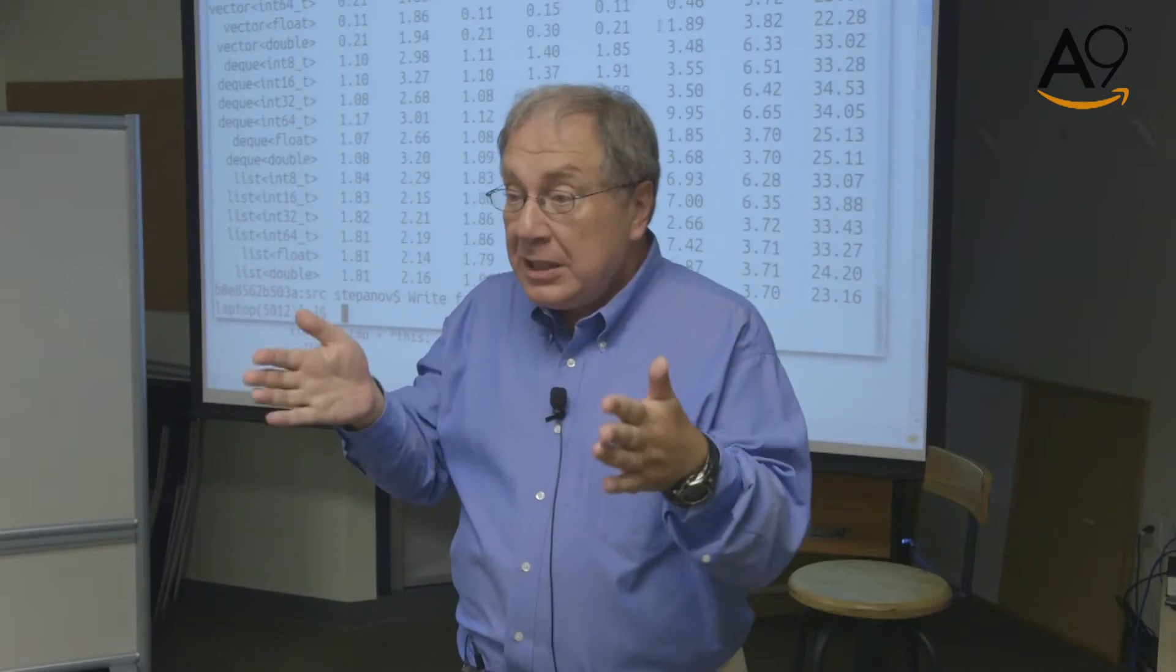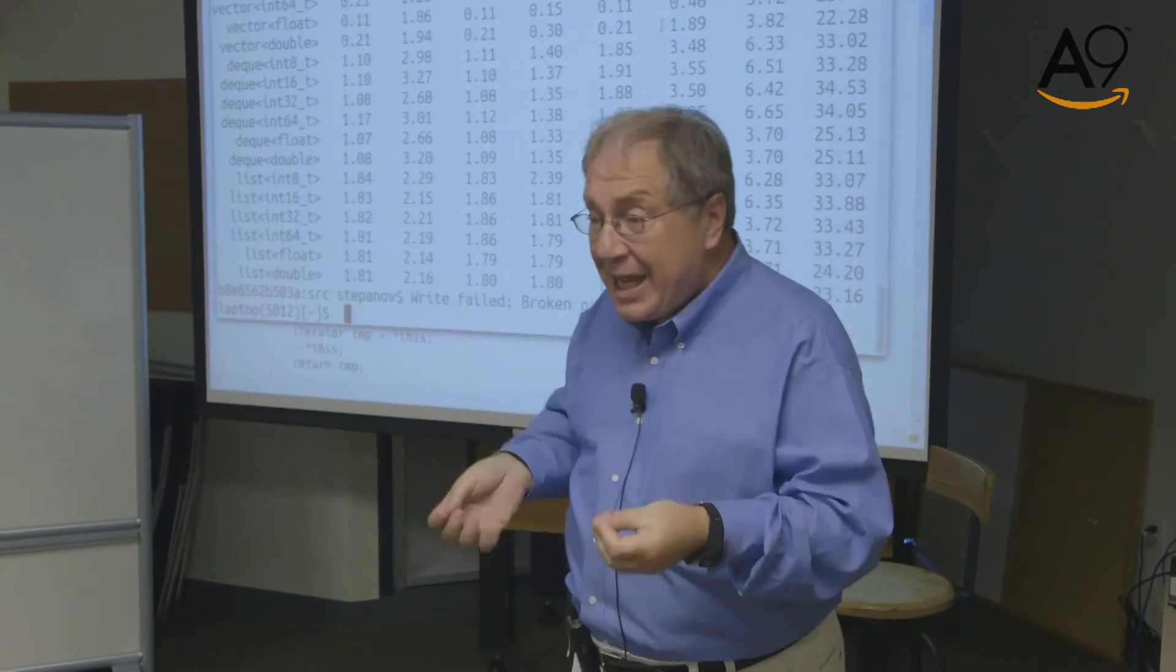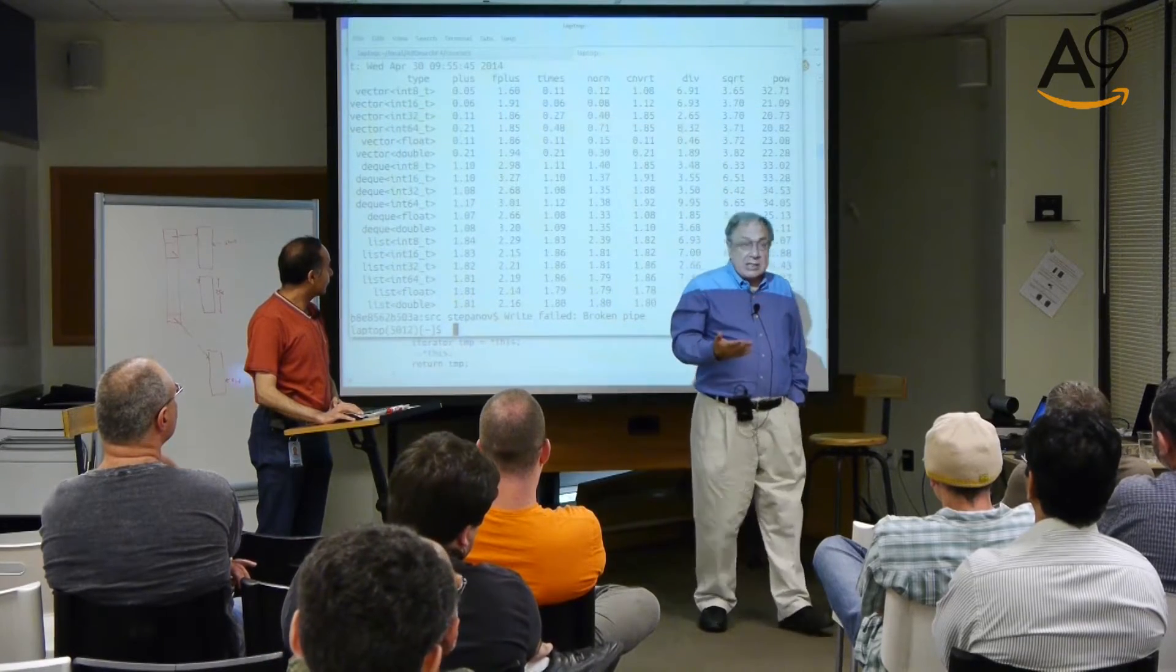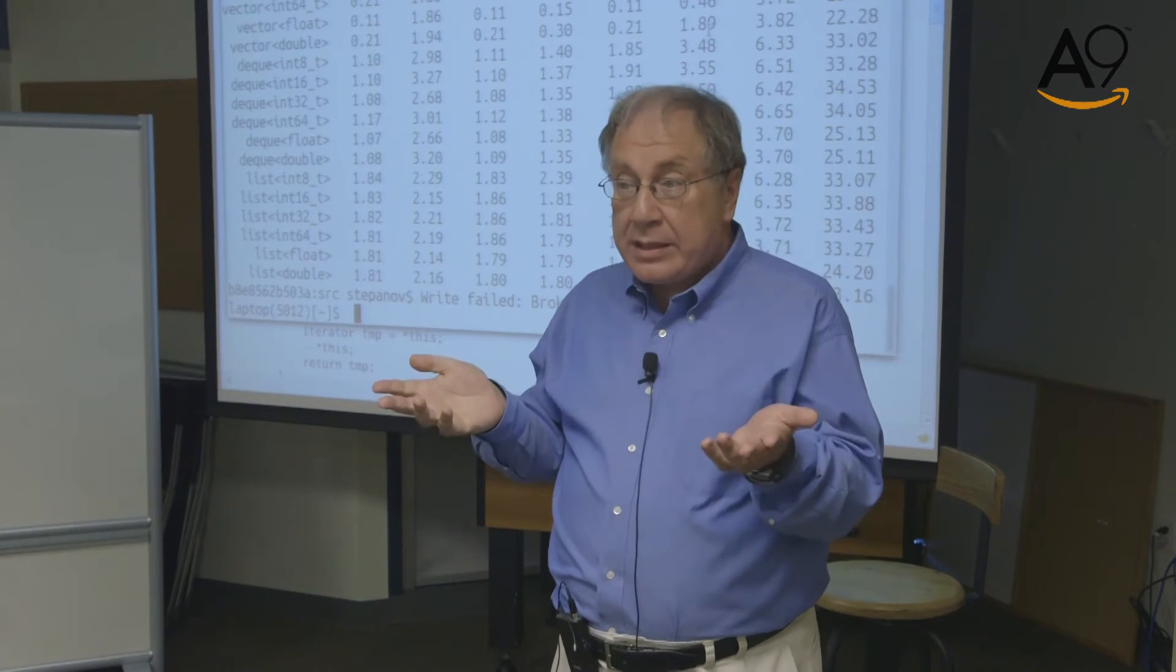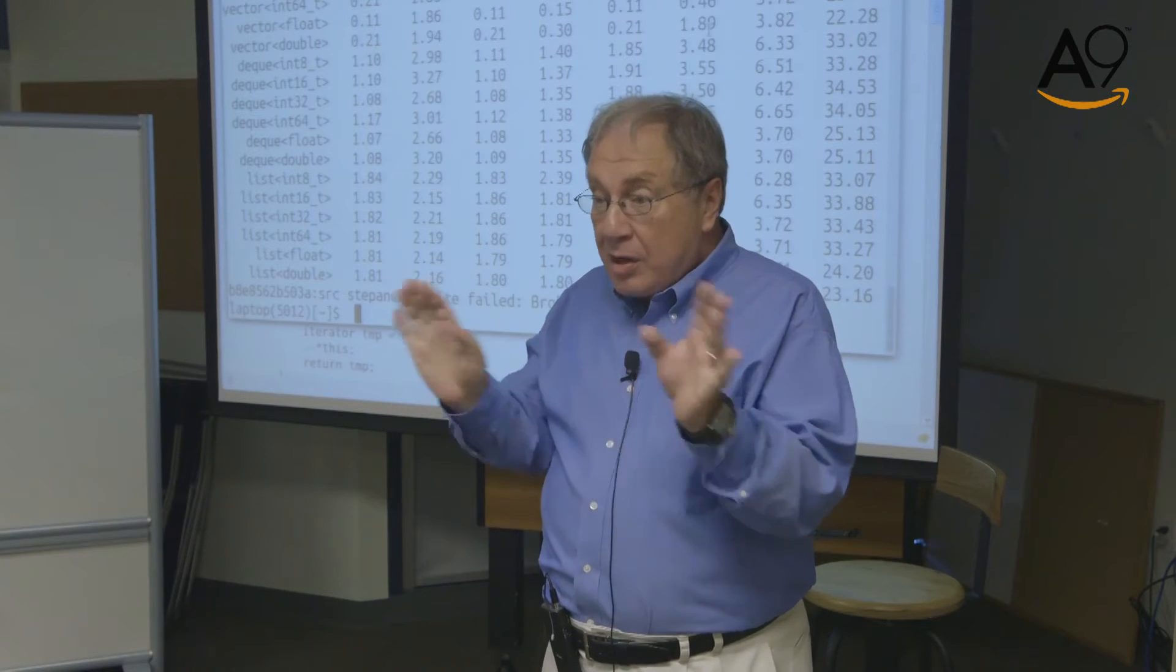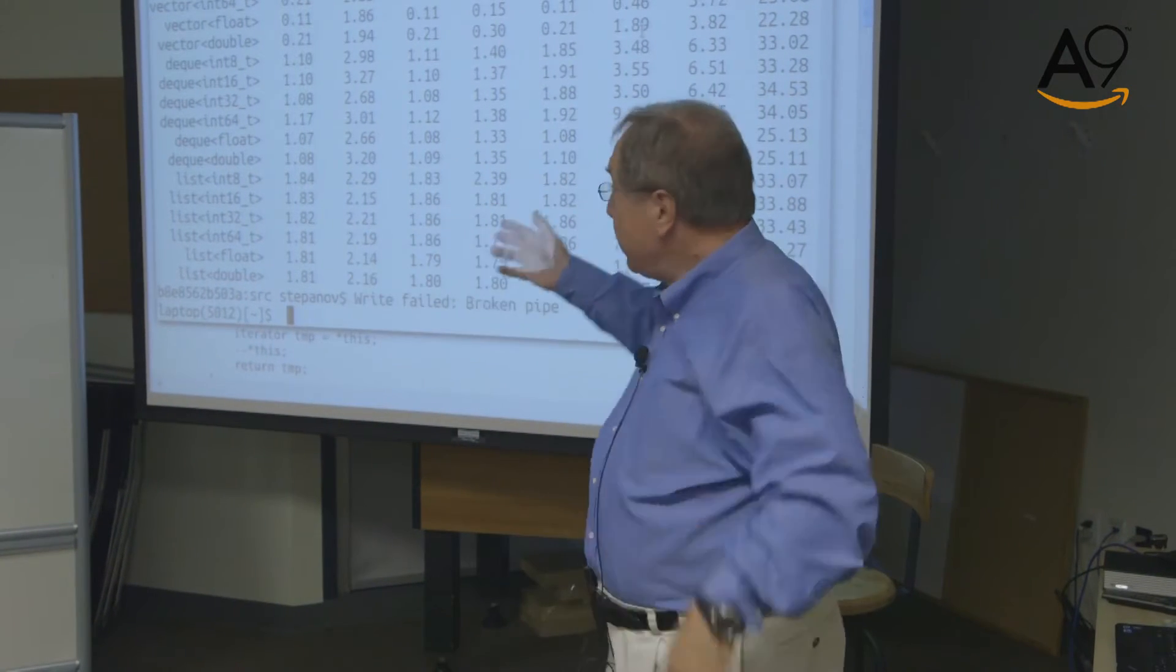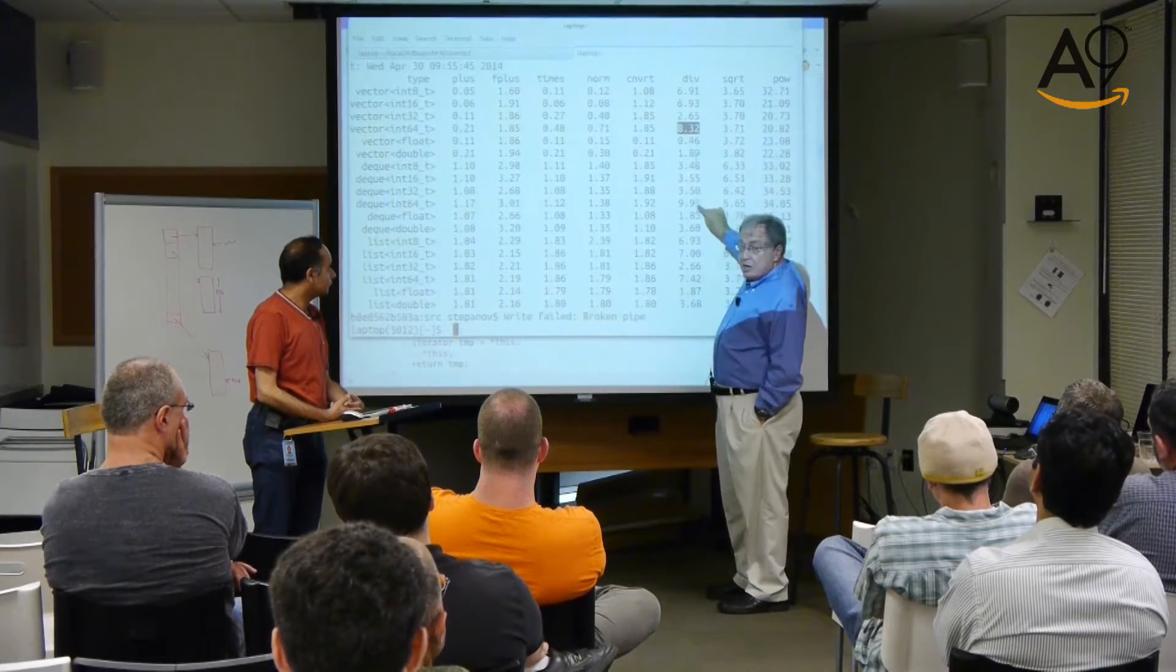We have to scream so that Intel guys will listen. Observe this terrible fact, which we pointed before. If you divide doubles, it's faster than if you divide 32-bit integers. It is wrong. Since nobody is applying pressure to Intel, especially look at their horrendous numbers for int64. Customers are not screaming, therefore they're not doing anything.